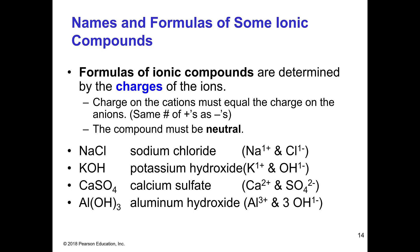In the case of aluminum, aluminum is +3 and hydroxide, which is a polyatomic ion, is −1. Since you've got three pluses and only one minus, you've got to have three of the hydroxide. So you'll have three times −1, giving you −3 and a +3. They're neutral.